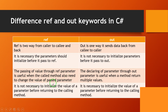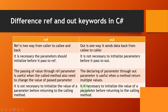Declaring a parameter through an out parameter is useful when a method needs to return multiple values. For ref, it is not necessary to initialize the value of a parameter before calling the method, but for out it is necessary to initialize the value of a parameter inside the called method before returning.